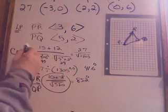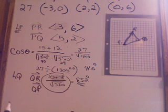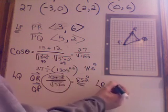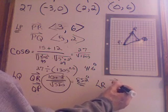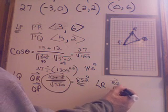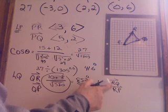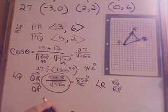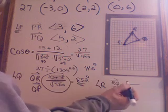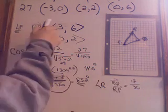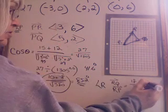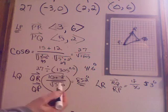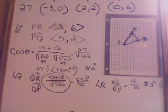For angle R, I use vector RQ and vector RP — both vectors must start with R. Work through the calculation and see if you can get the fraction 18 over 30, which comes out to 53 degrees. Remember: angle P uses vectors starting with P, angle Q uses vectors starting with Q, and angle R uses vectors starting with R. You will get a test question like this, so make sure you can do that work. Good luck!